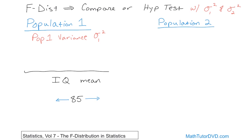If population one has a population variance sigma one squared, the same is true for population two: it has its own population variance sigma two squared. Maybe population two has a really wide variation — some people scoring very low and very high — making the variance much bigger. Maybe population one has tightly packed data where everybody scores close to the same value. That's what we're talking about.